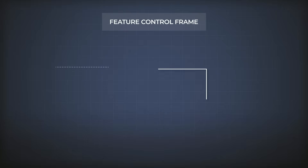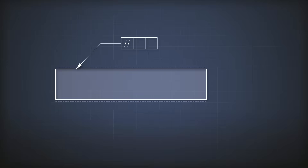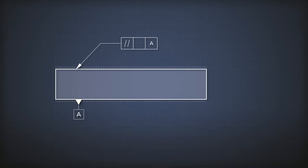Say we want to tolerate this surface to be parallel to that one. Then we have to give it a name — let's say A — and we put A in the third field. If it were English, it would sound like this: this surface should be parallel to that surface with a value of 0.2.